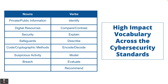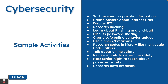High-impact nouns for cyber security include private and public, safeguards, coding, suspicious activities and breaches. Verbs start with identify and build up to explain, describe, evaluate, and recommend. Sample activities could include discussions about personally identifiable information, practicing phishing and clickbait activities, discussing sharing passwords, researching different types of codes in history, hosting password safety nights, and anything addressing personal versus private information or how to protect ourselves online.